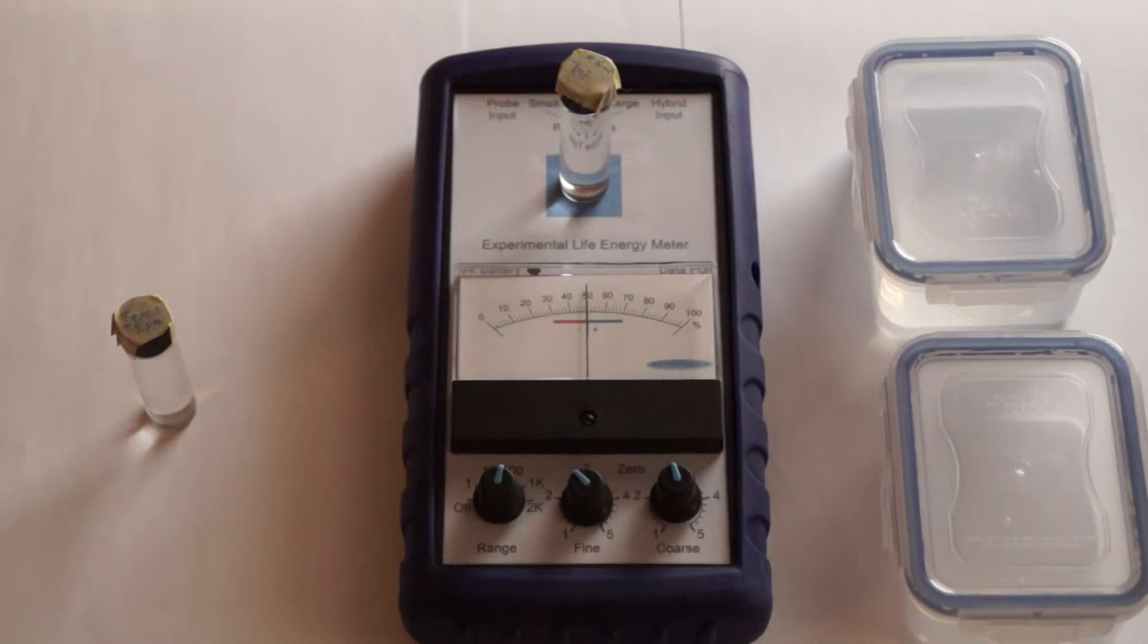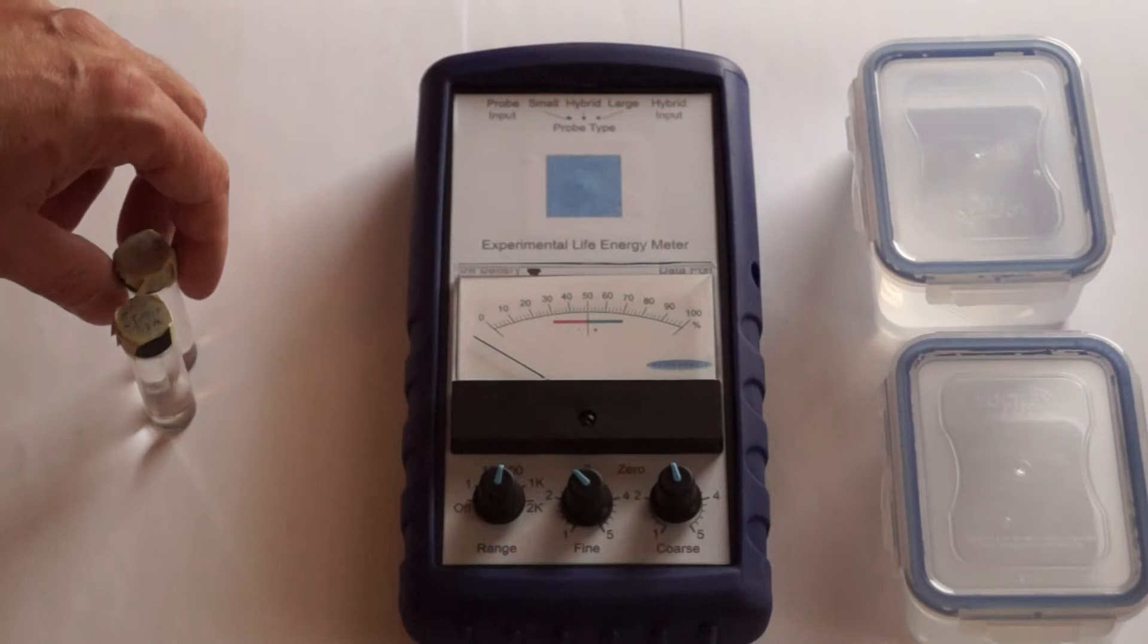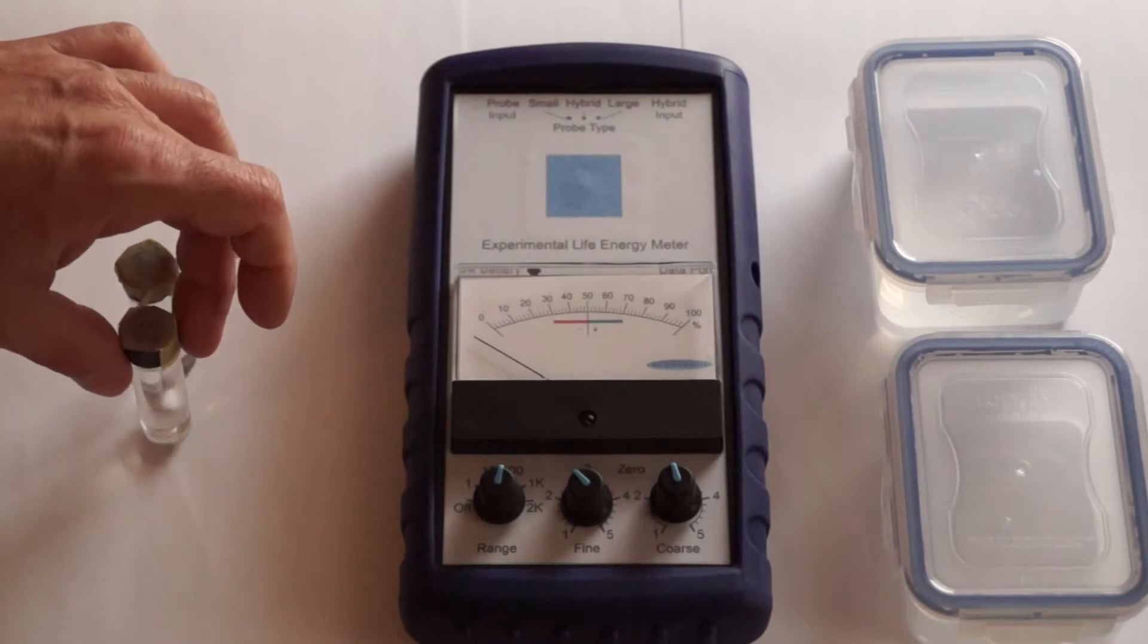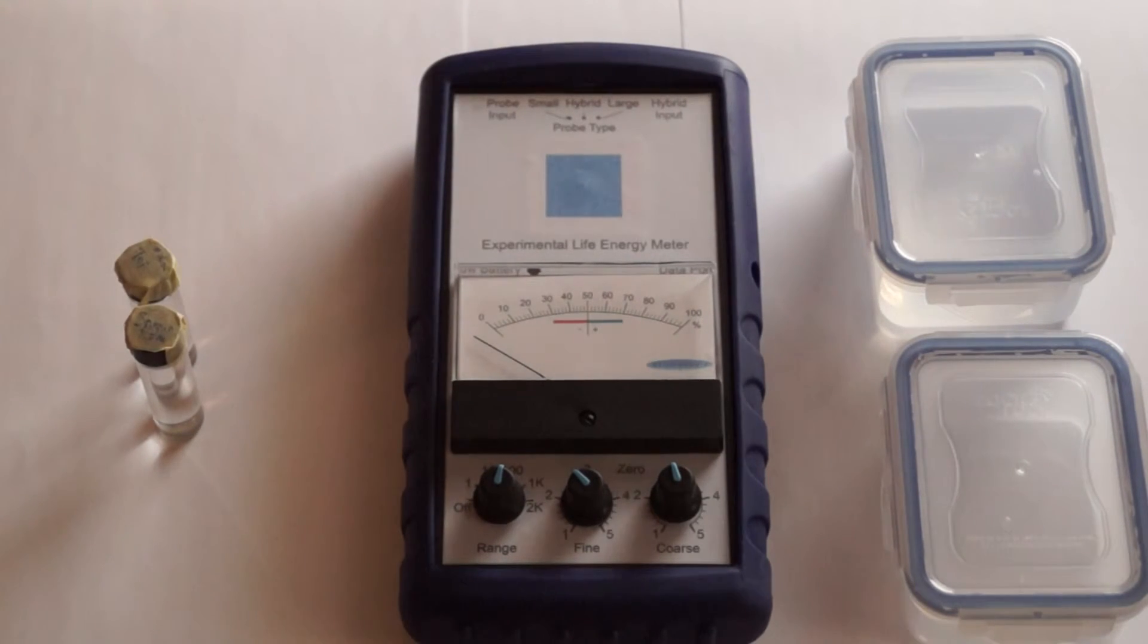Two water samples of different conductivity are measured directly on the meter. Sample 1 is 100k ohms per inch and sample 2 is 20k ohms per inch. Sample 2 reads 23% higher than sample 1 on the x100 range.